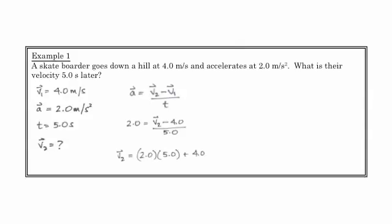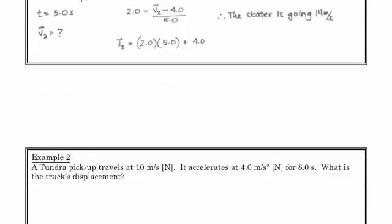We can now substitute, rearrange, and find that v₂ is equal to 14 meters per second. So the skater after 5 seconds has gone from 4 meters per second to 14 meters per second. That's not too bad. Let's take a look at example two.